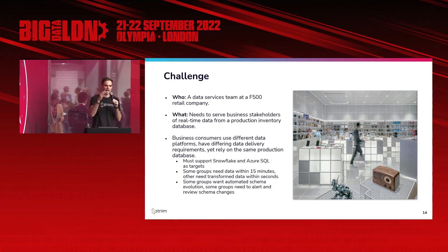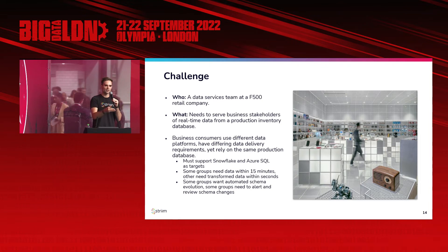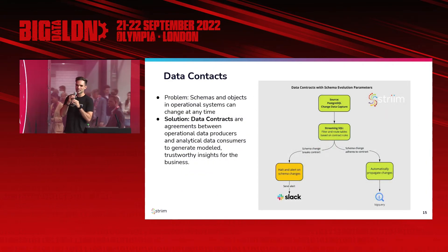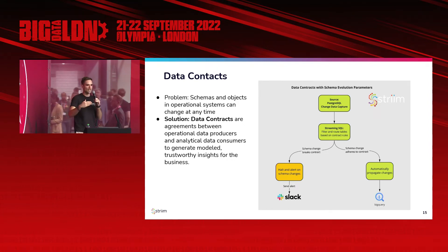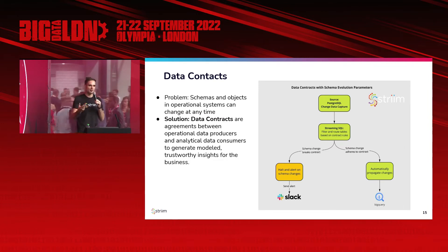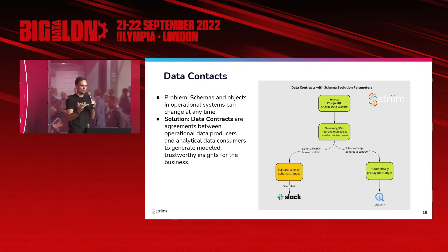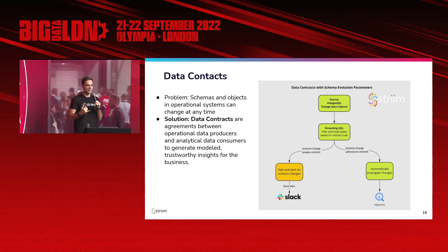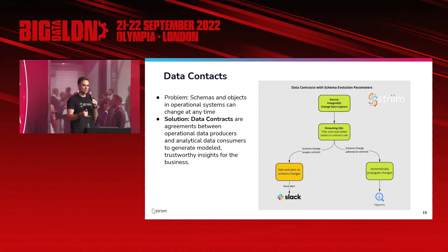They have one source of data but many consumers with different use cases. This is horizontal and can be applied to any industry — taking operational data and feeding it to N number of consumers who all have different use cases for it. When I say use cases, I mean the actual data model, the format, the freshness, and the way it's materialized in the target systems. Another interesting requirement is the concept of data contracts: schemas and objects in operational systems can change at any time, and engineering teams don't want to notify the analytics team every time schemas change.